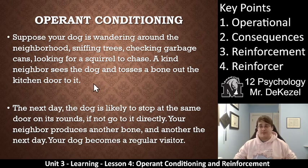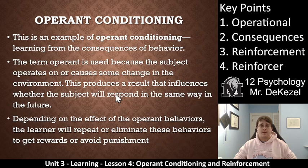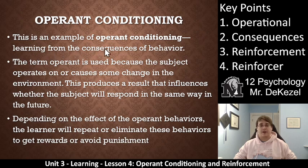We've kind of all seen this before, maybe with a stray cat, the birds that we or our parents feed, or maybe an unwanted visitor like a squirrel or a raccoon. But this is an example of operant conditioning, where we learn from the consequences of behavior.